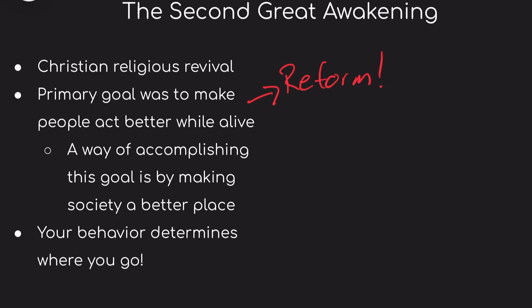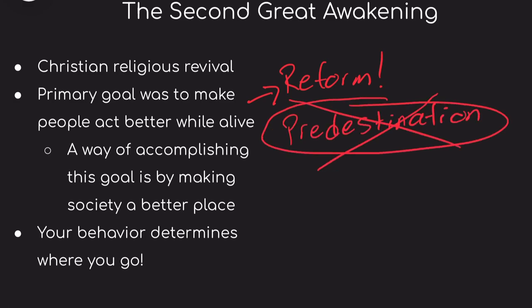In short, this movement tried to dismiss the idea of predestination — the belief that your final destination of heaven or hell is decided when you're born. Instead, supporters pushed that if you're a good person you'll likely go up, and those who are bad, down — but this is all determined by your own actions while you're alive.